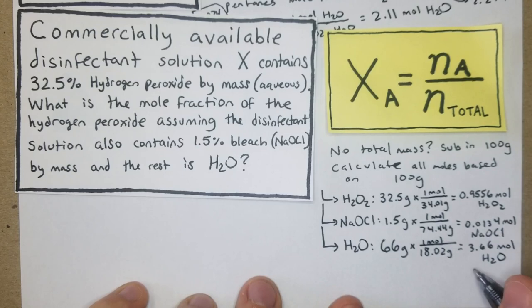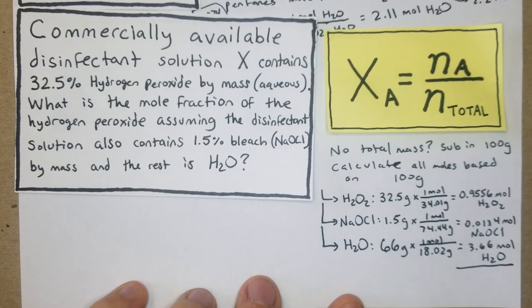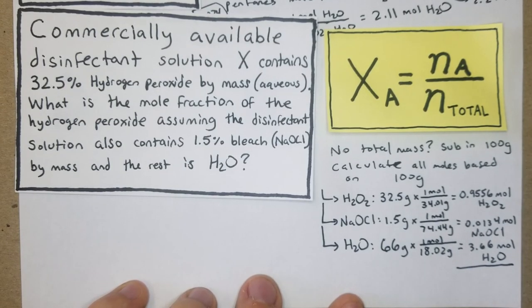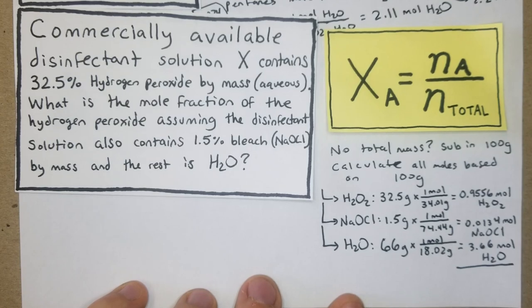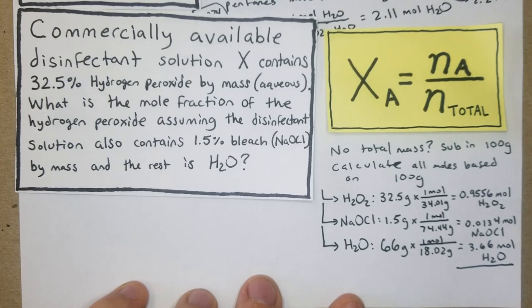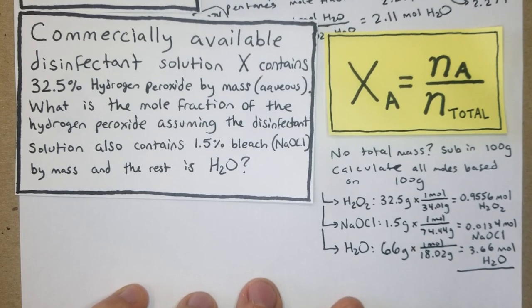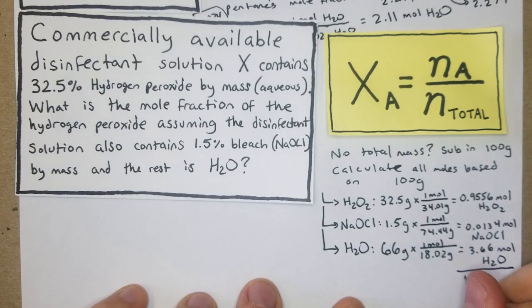Okay cool, so now we got some numbers here. We can sum these. We got 0.9556 of the hydrogen peroxide plus 0.0134 plus 3.66, which gives us 4.629 moles total.